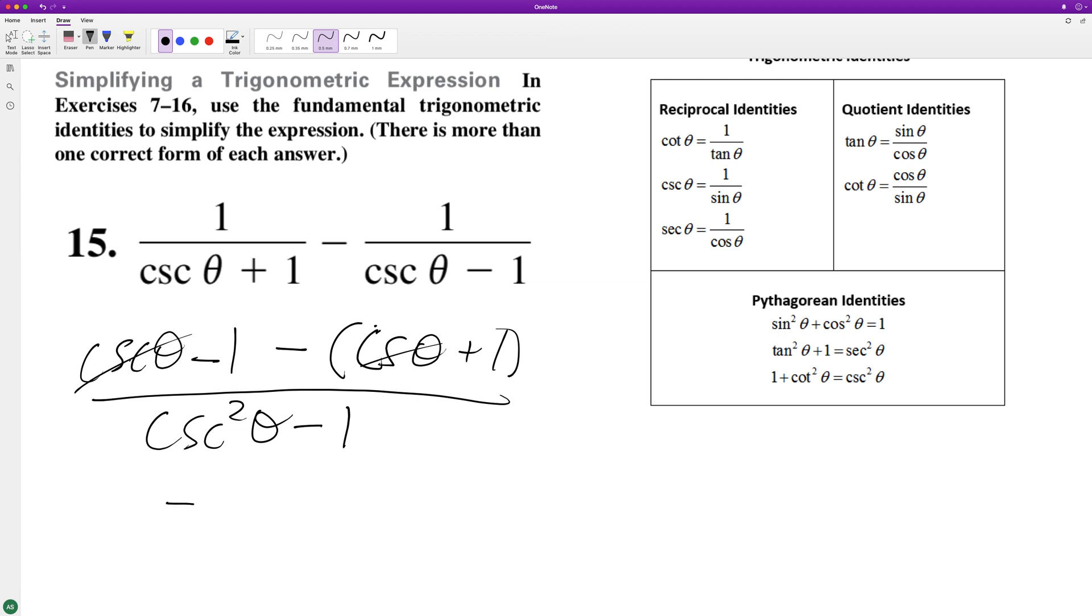We're left with negative two over cosecant squared theta minus one. That's the same thing—if we subtract one from the right side, we end up with cotangent squared on the bottom.